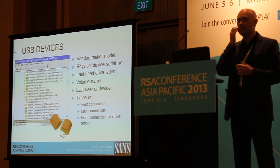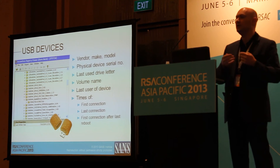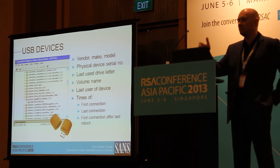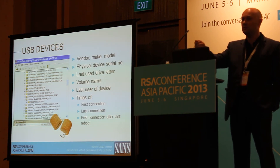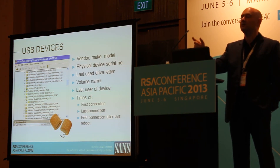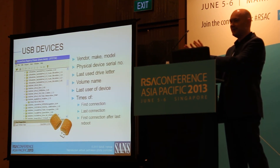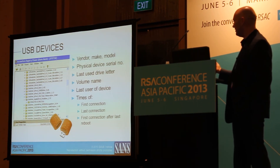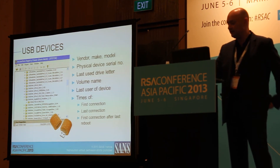One of the most common cases we do is intellectual property theft. A company will ring us and say they think someone has taken their sensitive information. One of the first pieces of evidence is the user's computer, and one of the things we always look at is the use of removable devices. We can very quickly provide a list of every removable device that was plugged in, right down to the physical serial number. That's great leverage for the company — they can go to the person and say, our forensic examiners identified these USB devices, can you please produce them — which can be quite confronting if you're on the receiving end.